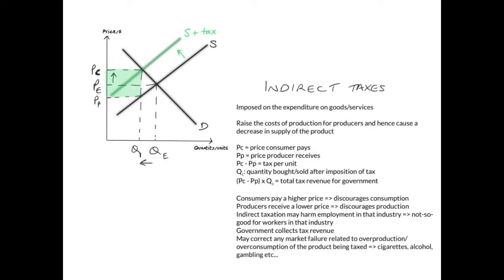The next diagram is for indirect taxes. Indirect taxes are taxes imposed on expenditure on goods and services. They raise the costs of production for producers and cause a decrease in supply — the supply curve shifts from S to S plus tax, shifting to the left. Key labels to know: PC is the price the consumer pays, and PP is the price the producer receives. PP is lower than PC because the difference between them is the tax per unit — the vertical distance between the two supply curves.